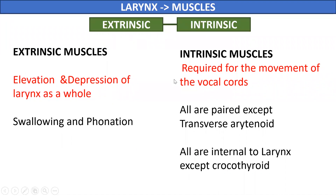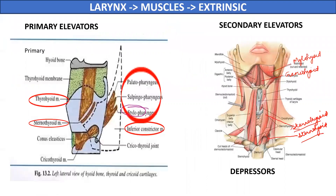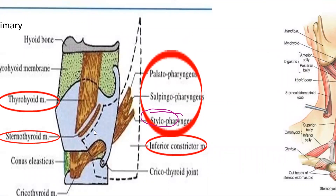First, the extrinsic muscles. They are either elevators or depressors of the larynx. Among the elevators there are primary and secondary elevators. Primary elevators are muscles attached directly to the cartilages of the larynx. These include the thyrohyoid muscle, attached to the oblique line of the thyroid cartilage, and muscles of the pharynx attached to the posterior border of the thyroid cartilage — namely palatopharyngeus and stylopharyngeus muscles.